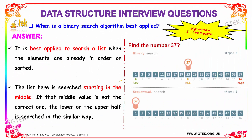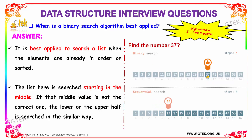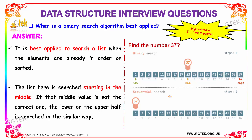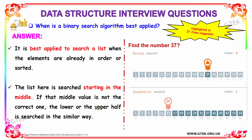The next question is: when is a binary search algorithm best applied? It is best applied to search a list when the elements are already in order or sorted. The list is searched starting in the middle. If the middle value is not the correct one, then the lower or upper half is searched in a similar way. This takes only a minimal amount of time using the mid, low, and high method. These kinds of questions are highlighted in interviews at Capgemini and other IT firms.